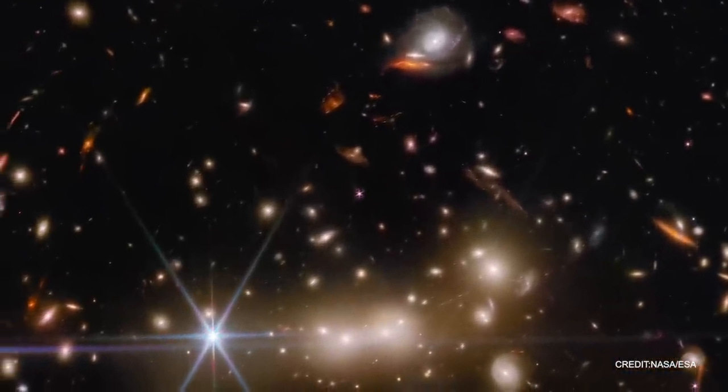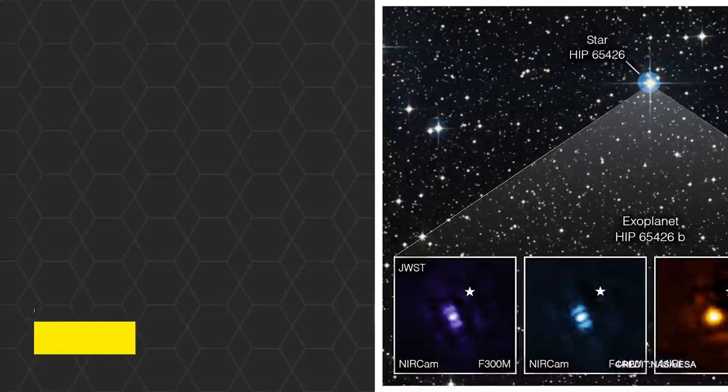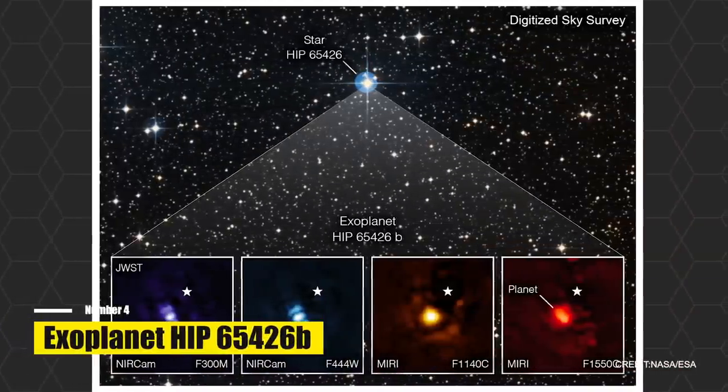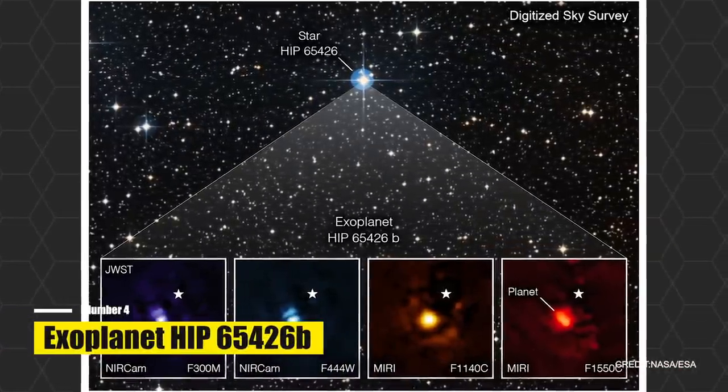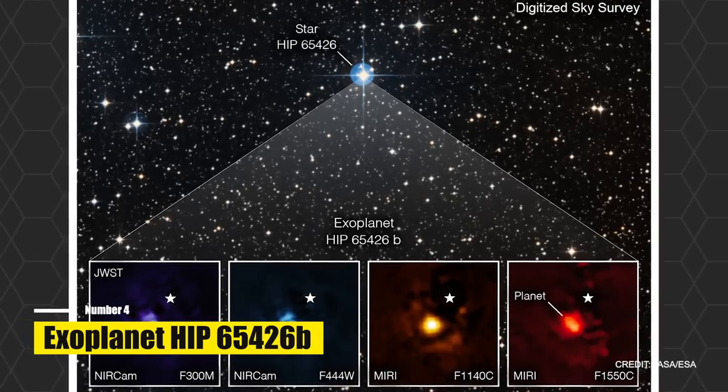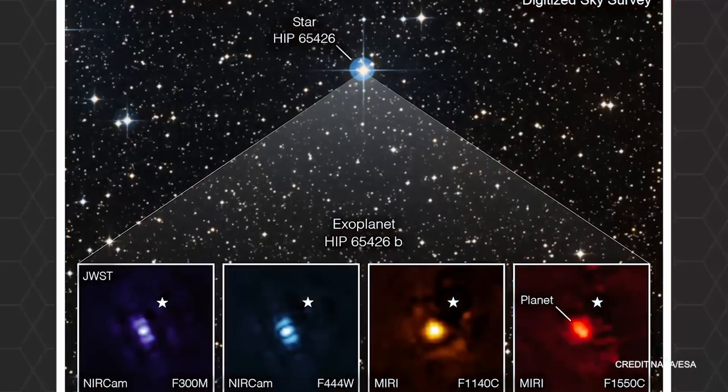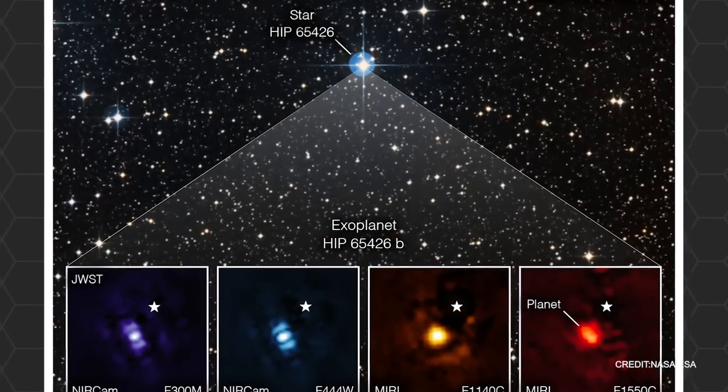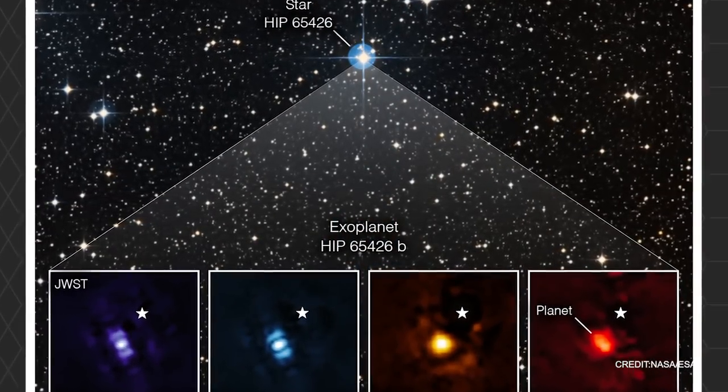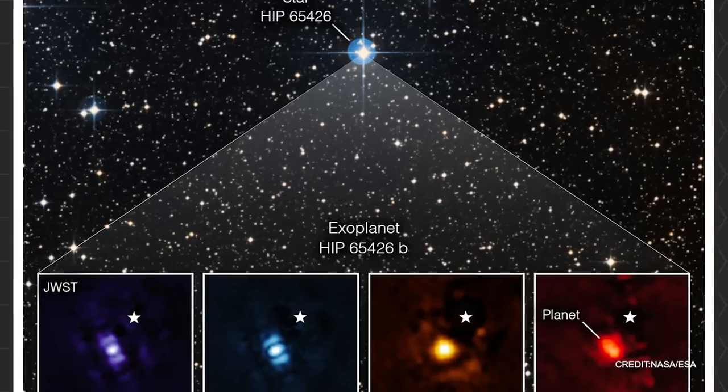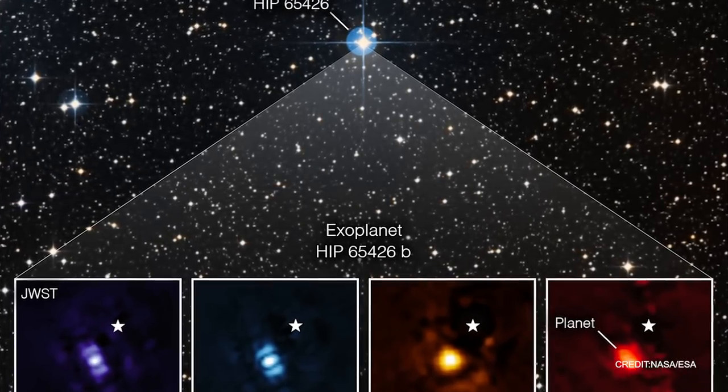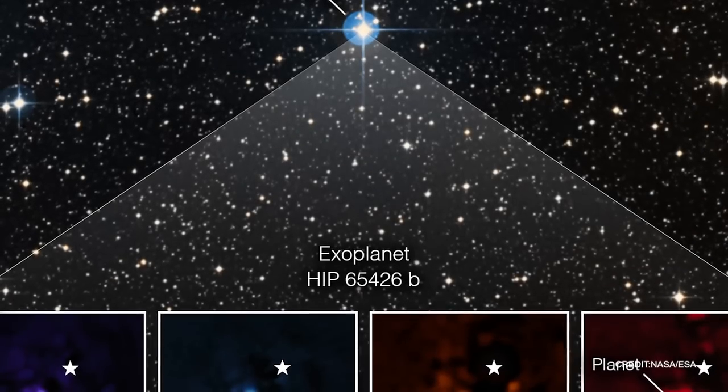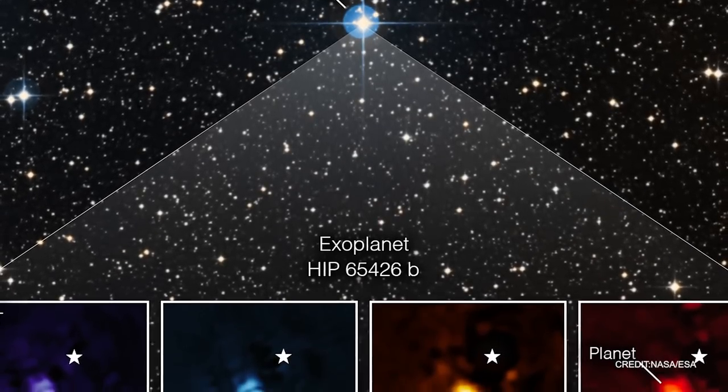Number four, exoplanet HIP 65426b. Are you ready for a kaleidoscopic journey into the cosmos? Our destination, the exoplanet HIP 65426b. We'll explore this alien world through the eyes of the James Webb Space Telescope, with a vibrant palette of infrared light. Each color in the image symbolizes a different band of infrared light, and thus represents a unique snapshot of the exoplanet.